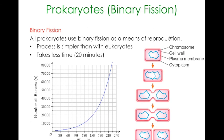Basically the same thing happens: the chromosomes duplicate, and then there is a breaking of the plasma membrane and cell wall, and then the cell pinches into two and you've got your two bacteria. We've already talked about how this forms — it's a less complicated version of mitosis and it happens at a much more rapid rate.